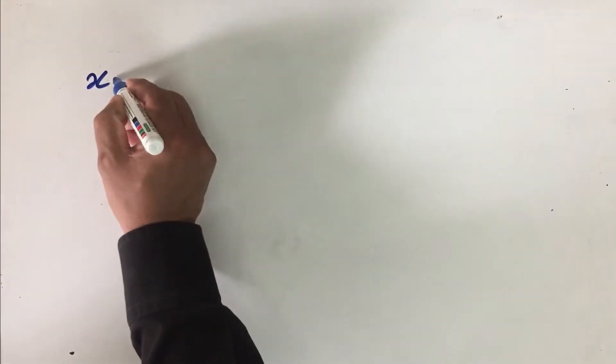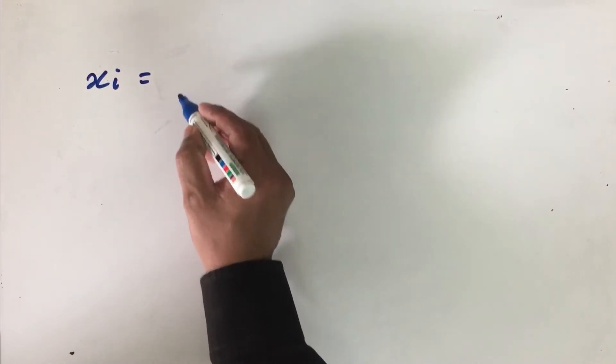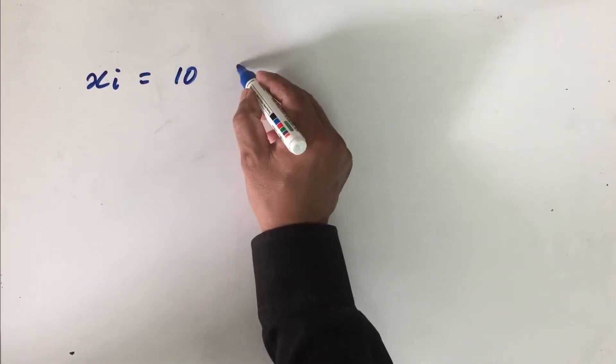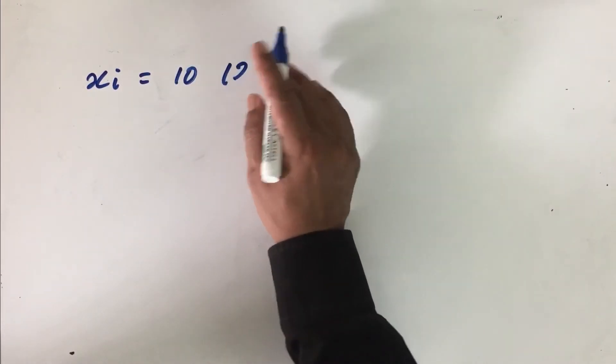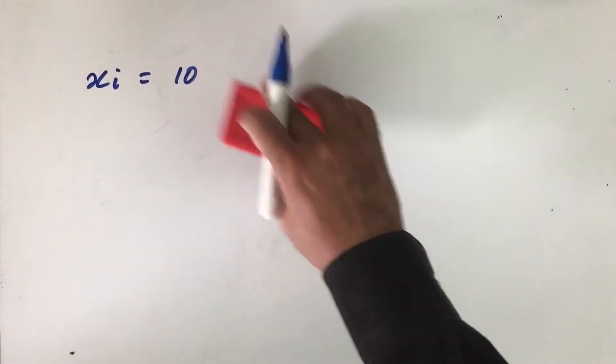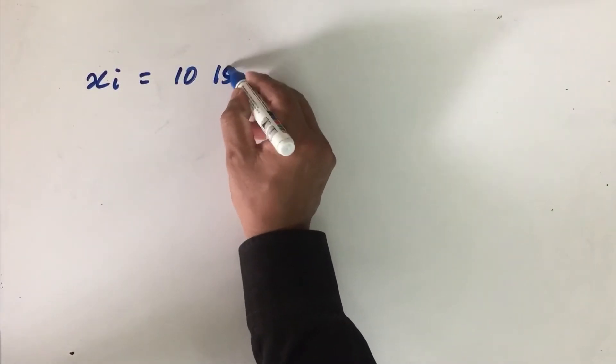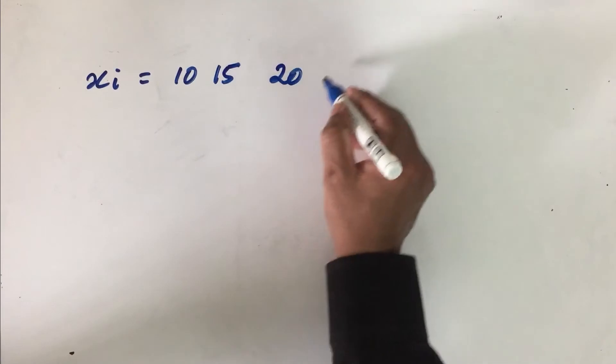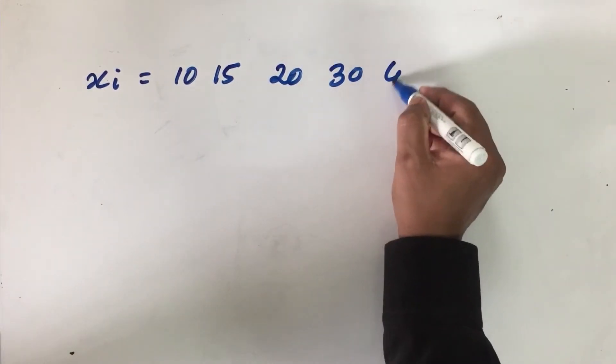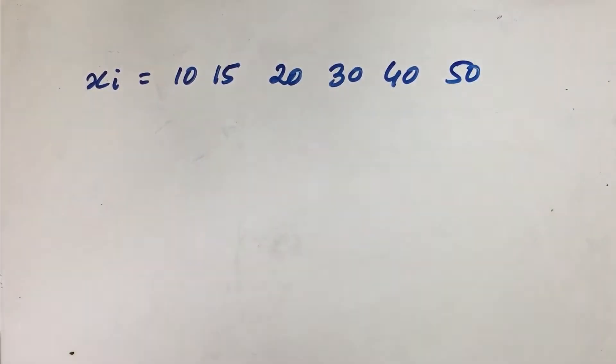Let us take a very simple example. Let us assume that the xi values are 10, 15, 20, 30, 40, 50, etc. So these are the xi values. Now we want to find out what is the standard deviation.